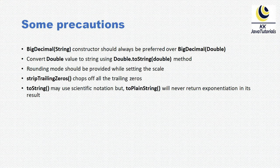Some precautions you should take when using BigDecimal for the financial world. As mentioned, we should use the BigDecimal constructor which accepts a String. The BigDecimal String constructor should always be preferred over the BigDecimal double constructor. To convert a double value to a String, use Double.toString(). The Double wrapper class has a static method called toString() — you can call it by class name, pass the double value, and you will get the corresponding String representation of that number, which you can then pass to the BigDecimal constructor.